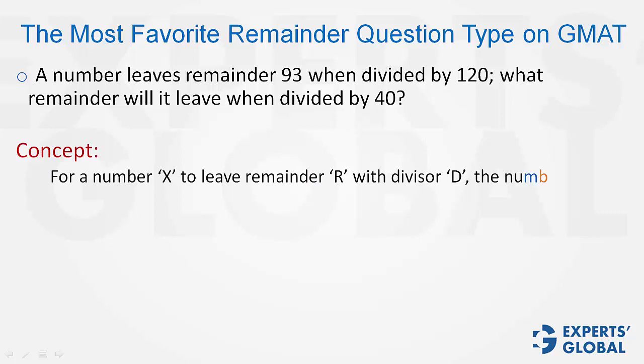The concept is that for a number to leave remainder R with divisor D, it has to be of the form D into P plus R, where P is a positive integer.